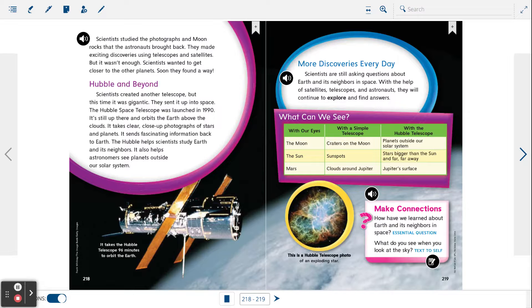Hubble and beyond. Scientists created another telescope. But this time, it was gigantic. They sent it up into space. The Hubble Space Telescope was launched in 1990. It's still up there and orbits the Earth above the clouds. It takes clear, close-up photographs of stars and planets. It sends fascinating information back to Earth. The Hubble helps scientists study Earth and its neighbors. It also helps astronomers see planets outside our solar system.